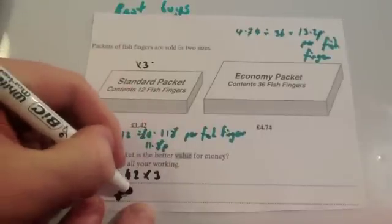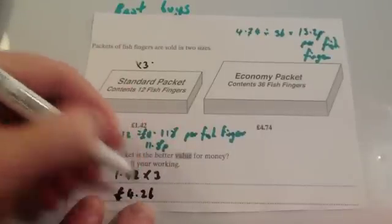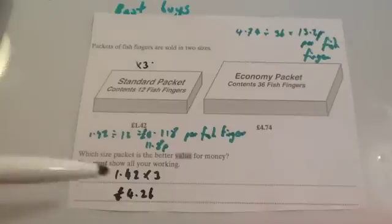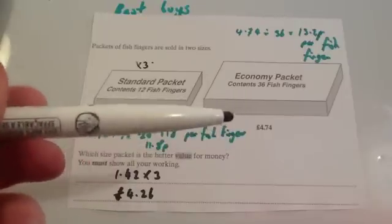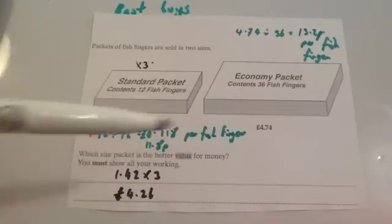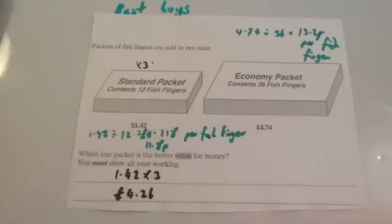This is probably the method that I would use in a shop. Therefore, because this one is £4.26 for 36 fish fingers and this one's £4.72 for 36 fish fingers, this one's better value for money, and obviously you'd write that in a sentence.